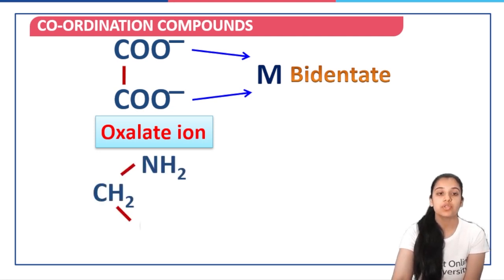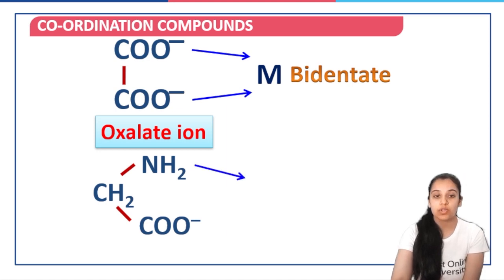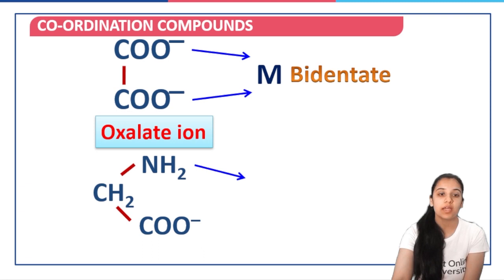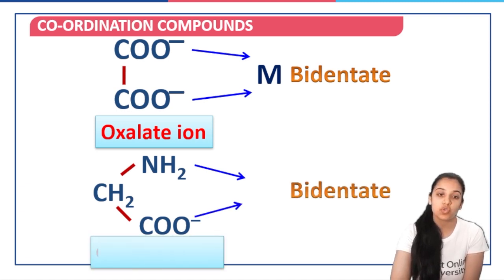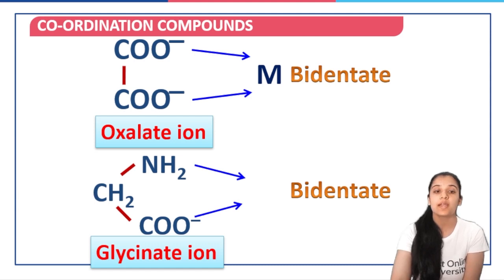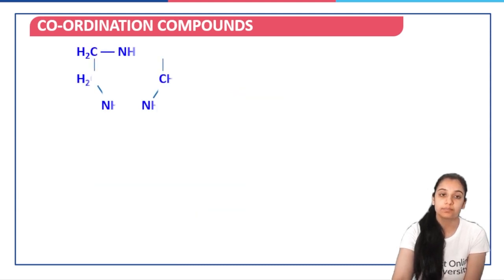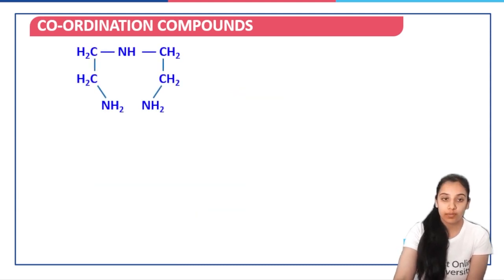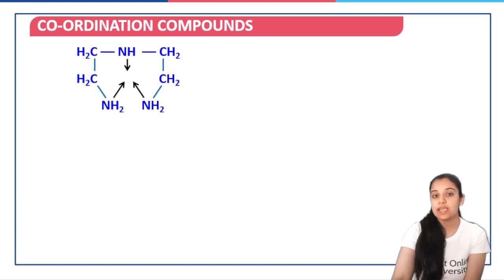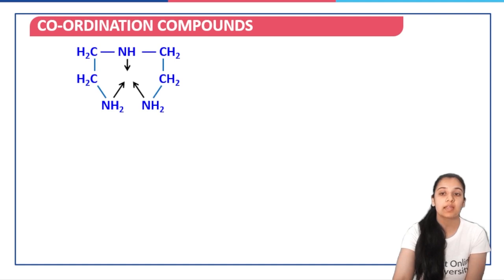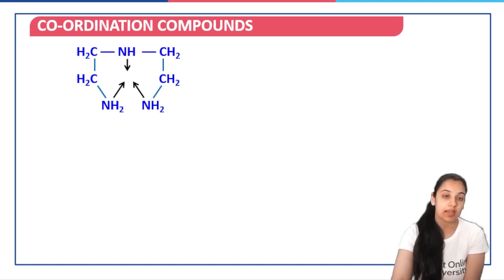Similarly, glycinate ion has two donor atoms — both nitrogen and oxygen can form coordinate bonds with the metal atom — making it a bidentate ligand. If we look at another complex, there are three nitrogen atoms which contain a lone pair and are capable of forming three coordinate bonds with the metal ion. Therefore, this is a tridentate ligand.